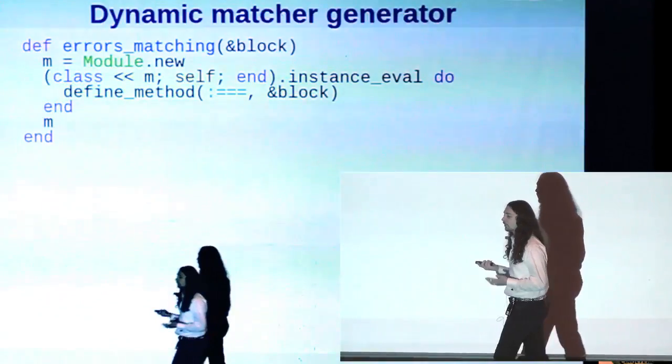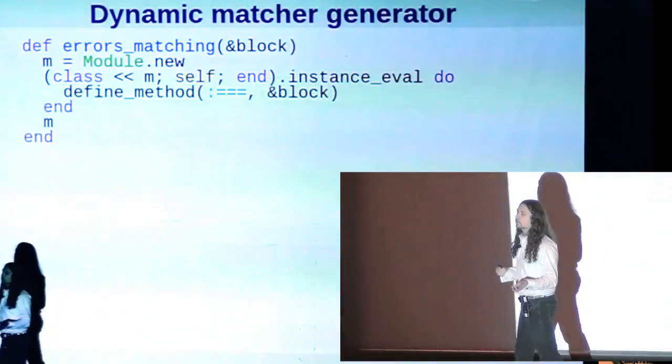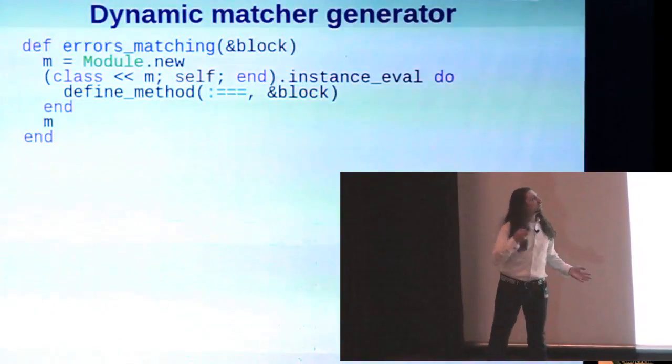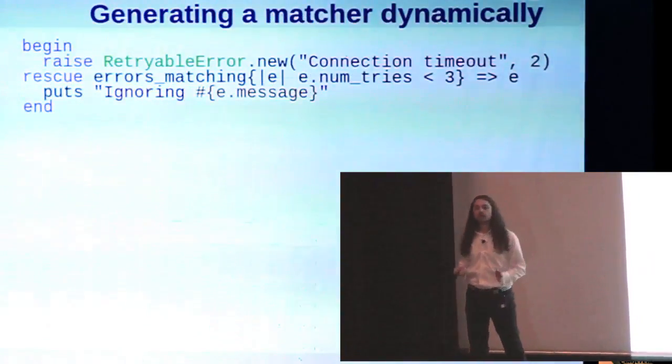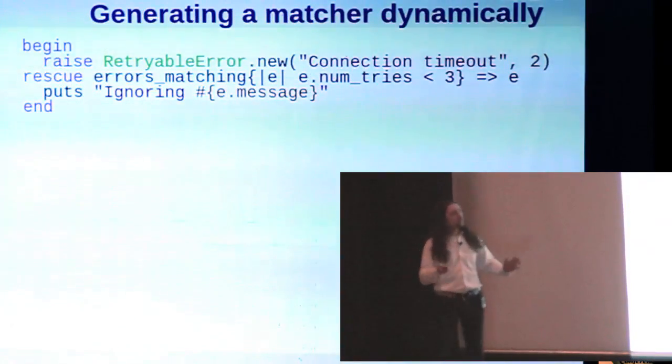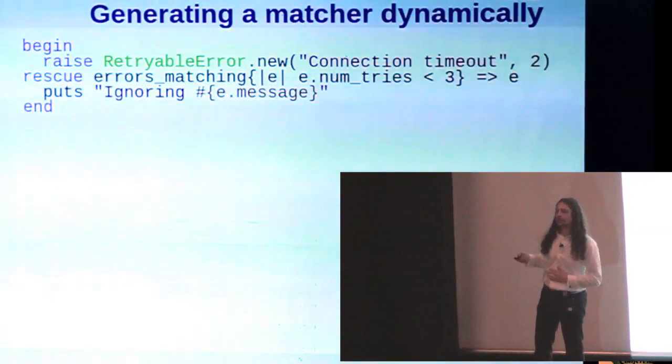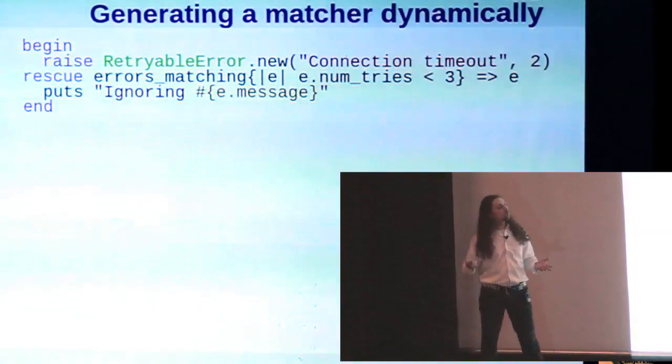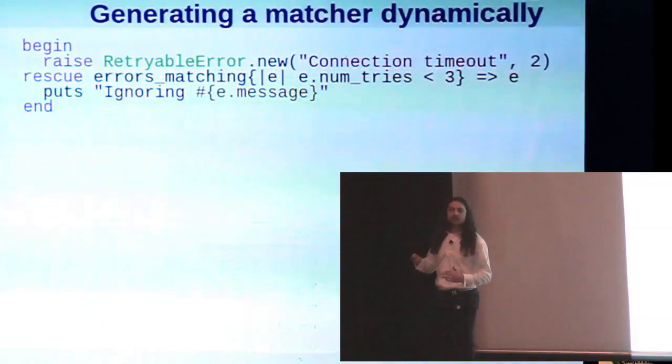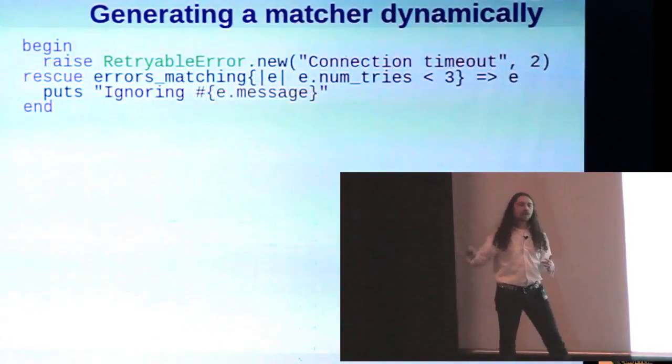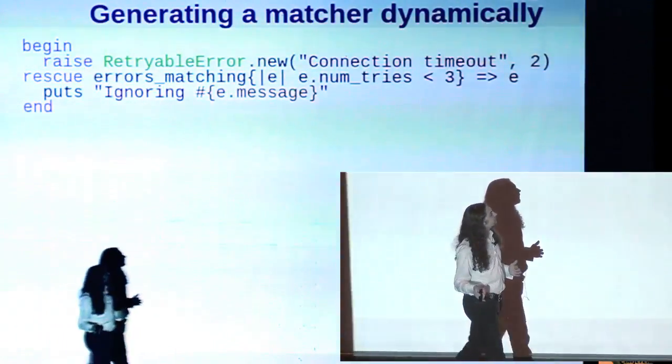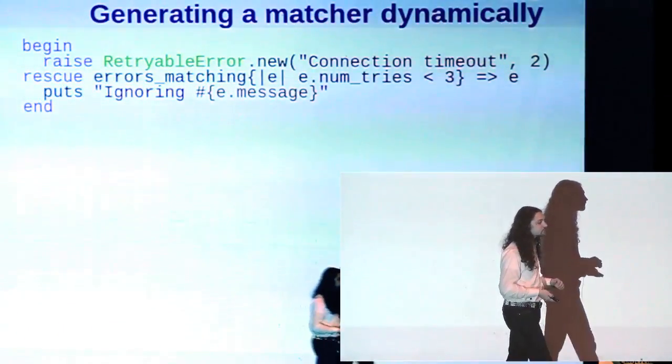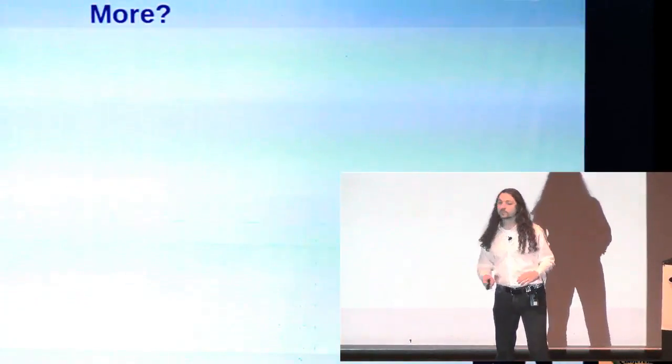So we could generate our own anonymous modules that define custom three equals operators. Here's one which just defines the three equals as doing whatever the block contains, which is probably about as clear as mud, but hopefully this will clarify what we're doing here. Let's say we have this notional retriable exception, or retriable error, which contains a count of the tries that this operation, times that this operation has been tried. We can use this errors_matching method that we defined in the last slide to define a dynamic way of matching exceptions. So we say, match any exception where the number of tries attribute is less than three.